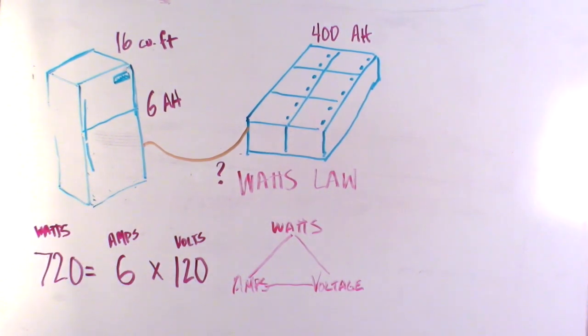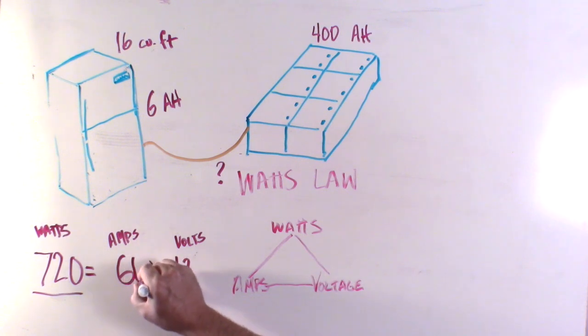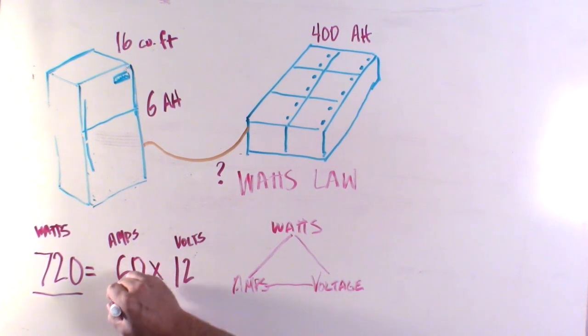We can solve this using the same equation. Since watts are the constant here we'll leave 720 and just need to change this 120 to 12. Now in order to get 720 watts per hour out of a 12 volt system, we need to draw 60 amps per hour out of the batteries. And we're not finished yet. Because in order to convert that energy we need to run it through an inverter which is only 85 to 90 percent efficient. So we need to multiply this number by 1.1 taking us to 66 amps per hour.